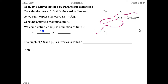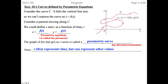We bring in a new parameter. The graph of f of t and g of t, as t varies, is called a parametric curve. Note that parametric curves have direction and orientation. t often represents time, but it can represent other values — if we're working with trig functions, it might represent theta or an angle.